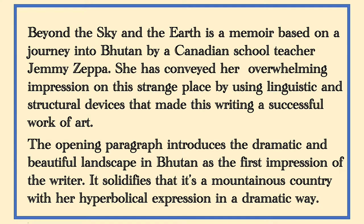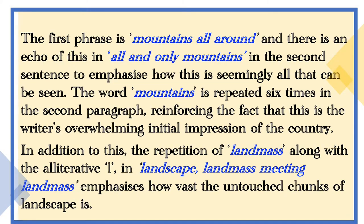The opening paragraph introduces the dramatic and beautiful landscape in Bhutan as the writer's first impression. It solidifies that it's a mountainous country with a hyperbolical expression in a dramatic way. The first phrase, 'mountains all around,' has an echo in 'all and only mountains' in the second sentence, emphasizing how this is seemingly all that can be seen. The word 'mountains' is repeated six times in the second paragraph, reinforcing the writer's overwhelming initial impression. The repetition of 'landmass,' along with the alliterative L in 'landscape,' 'landmass,' 'meeting landmass,' emphasizes how vast the untouched chunks of landscape are.